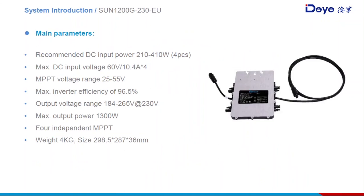This one is 1.2kW with 230V output voltage and 50Hz. It has a wider AC output voltage range of 184 to 265V. It can connect four PV modules with four independent MPPTs. There are two AC cable terminals on its body, which is very convenient for connecting in the solar system.